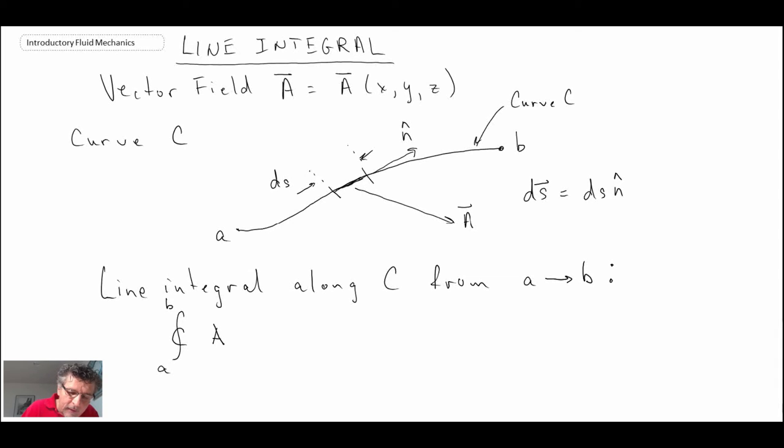And we would have our vector A, and the way that we do this is we use our dot product. That would give us the vector component along the direction ds. And that is the way that we evaluate a line integral.